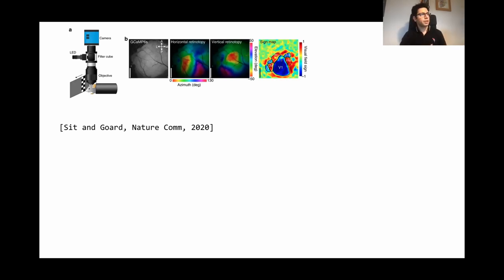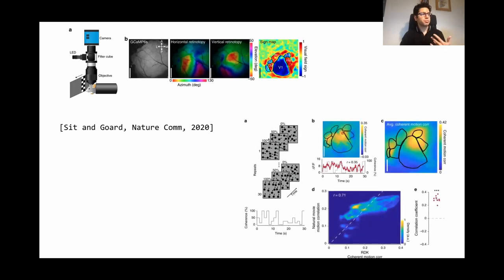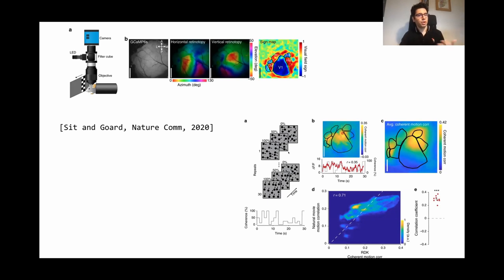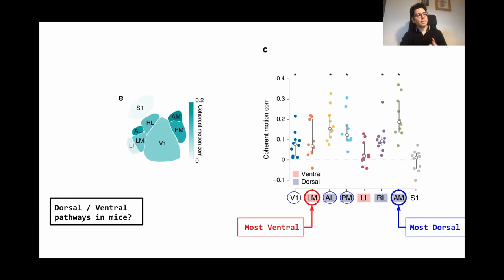The dorsal and ventral streams do exist in the mouse brain, and there are many studies providing evidence for this. In particular, a recent study by Sit and Bhatt used wide-field calcium imaging from all the visual areas of the mouse brain while mice were presented with random dot motion stimuli. In primates and other mammals, dorsal pathway areas are very responsive to this type of stimulus unlike ventral areas. They found that area AM was very responsive, indicating it is the most dorsal-type area in mouse brain, while area LM is much less responsive and more ventral.